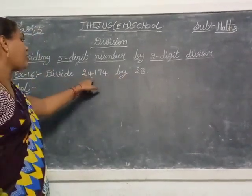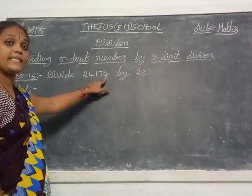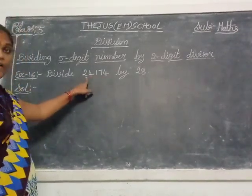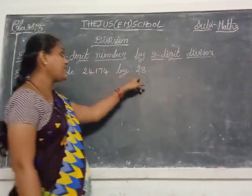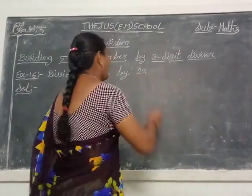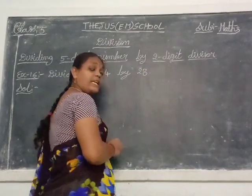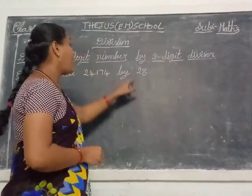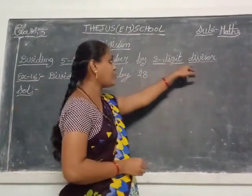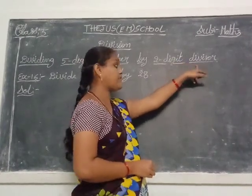So here 24,174 is the 5-digit number — 1, 2, 3, 4, 5. Yes, 5-digit number. So this 28 is called the divisor. How many digit divisor is here? 2-digit divisor. He told 2-digit divisor.